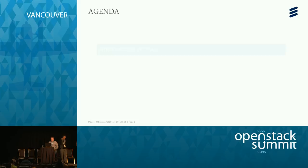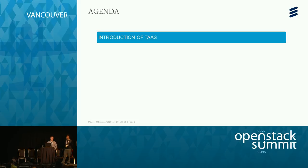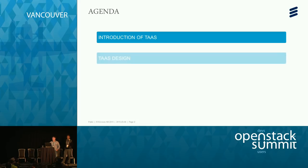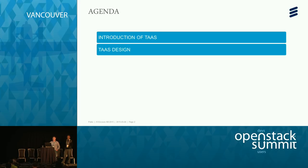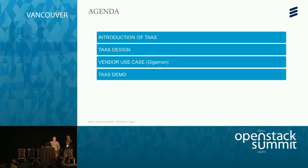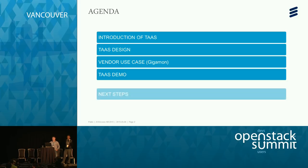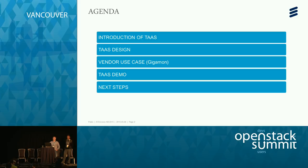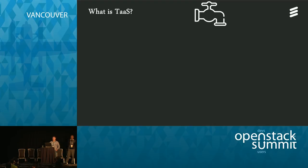Let's take a look at the agenda. We're going to talk about TAS — what it is — and go through a basic introduction for people who haven't been following discussions since the Kilo release. We'll cover the design, the data model, what's going on under the hood, a real-world use case from Gigamon, a complete demo of what we've built and are contributing back to the community, and then next steps.